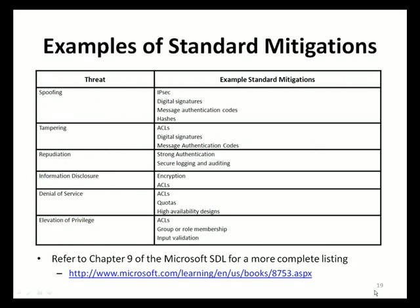Here are examples of standard mitigations by STRIDE threat types to help consider how to mitigate threats. For example, a standard mitigation to address spoofing threats may be to use IPsec, digital signatures, or message authentication codes. Chapter 9 of the Microsoft SDL book provides a more detailed chart of recommended standard mitigations as prescribed by the Microsoft SDL.